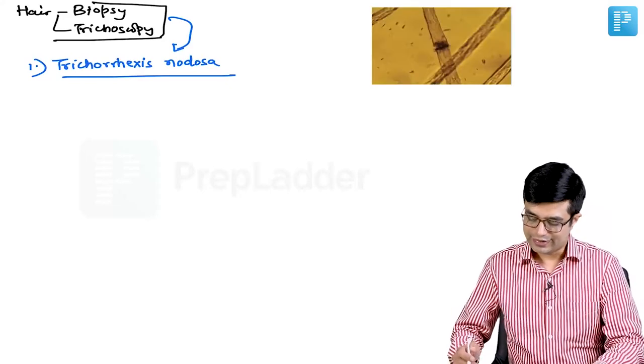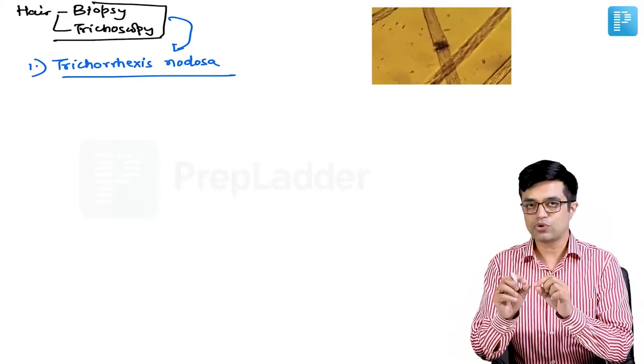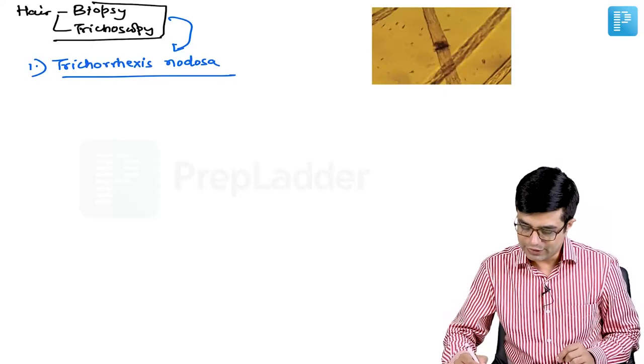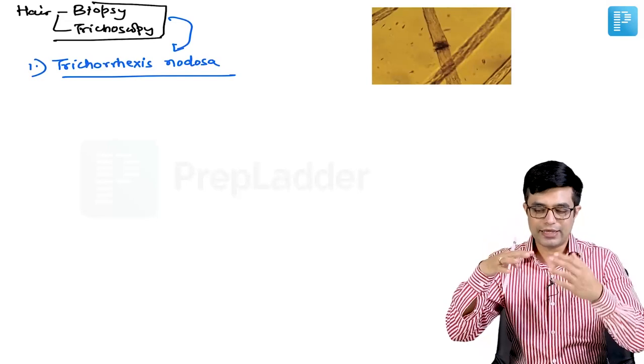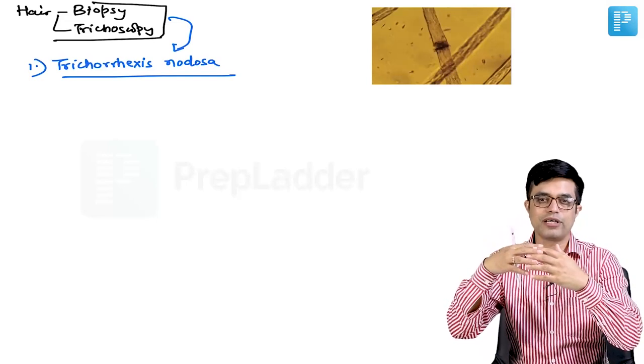This is how the hair will look like. This is a hair and there will be microscopic fractures in the hair with the two microscopic fragments having a fuzzy brush border and these brush borders will be interlocking with each other.